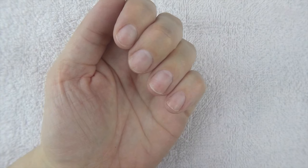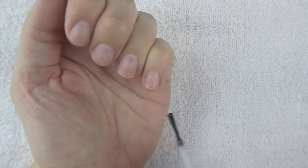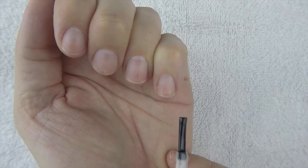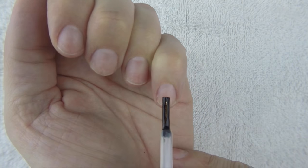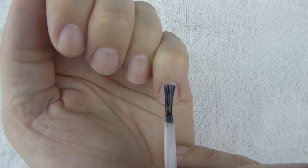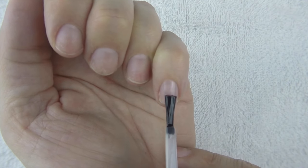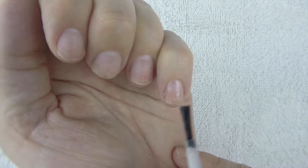Here's the trick to getting polish right up to the skin. Press your brush onto the nail in the middle of it and push it to the skin, then pull it down the nail. Next, swipe one side, then swipe the other side.